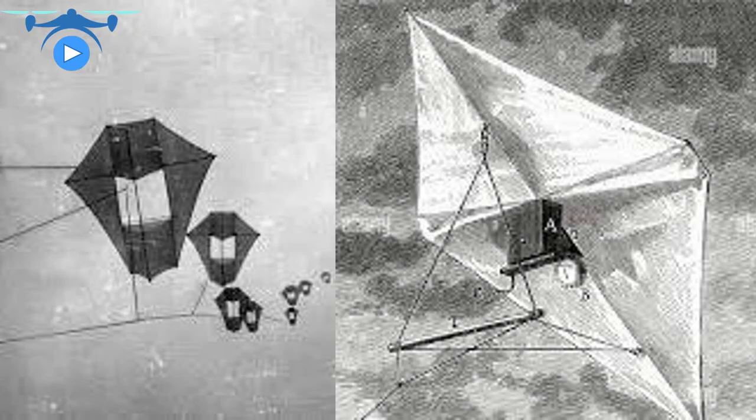The first person to take photographs from a kite was the British meteorologist E.D. Archibald, as early as 1882. He is credited with taking kite aerial photographs in 1887 by using a small explosive charge to release the camera shutter. And in 1890, Arthur Batte wrote the first book on aerial photography about his use of kite-supported cameras.